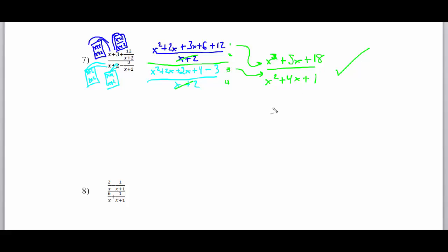And this actually could have been done fast like this because the denominator of the numerator is the same as the denominator of the denominator.